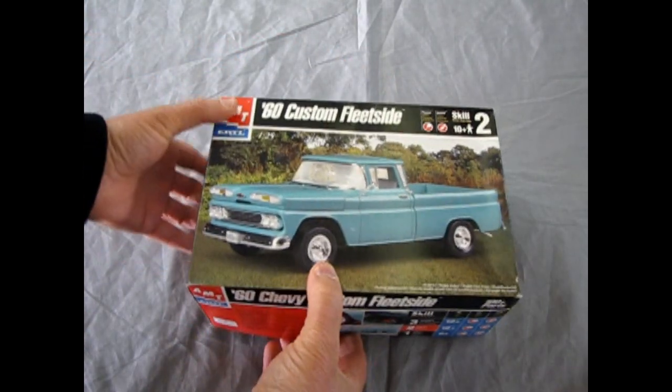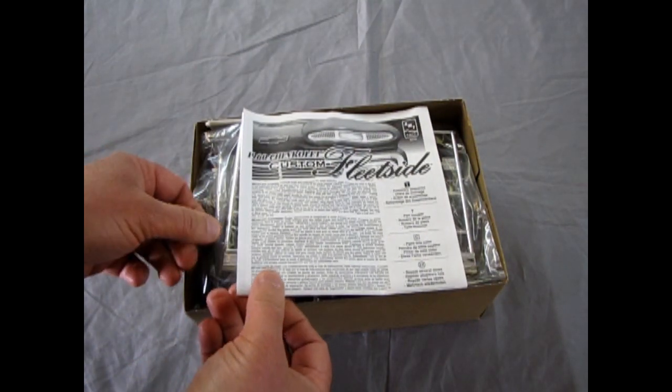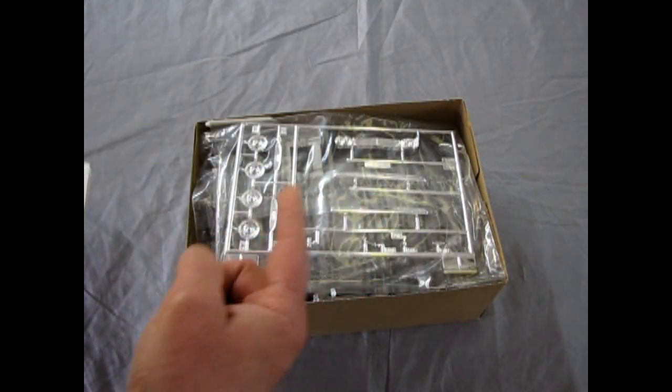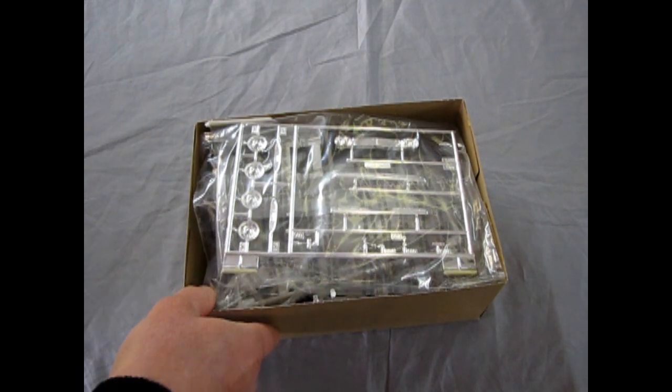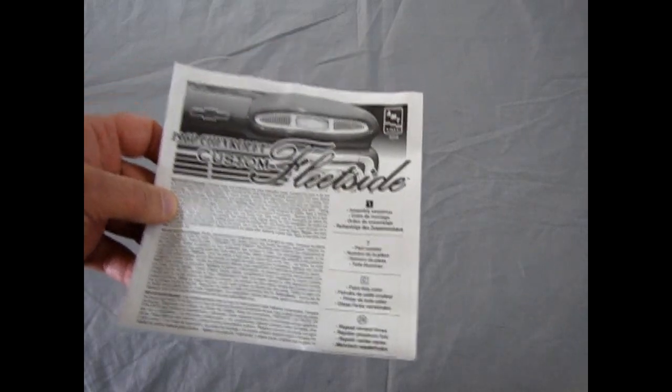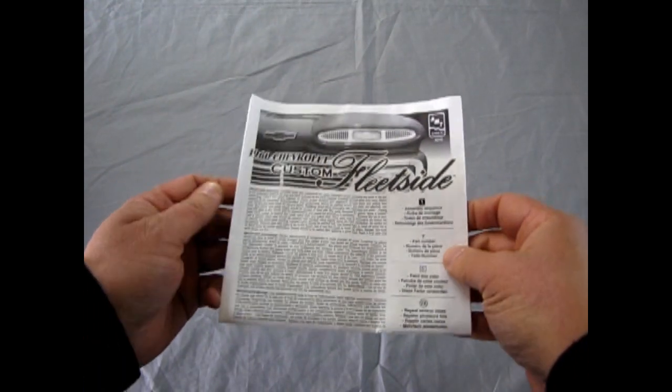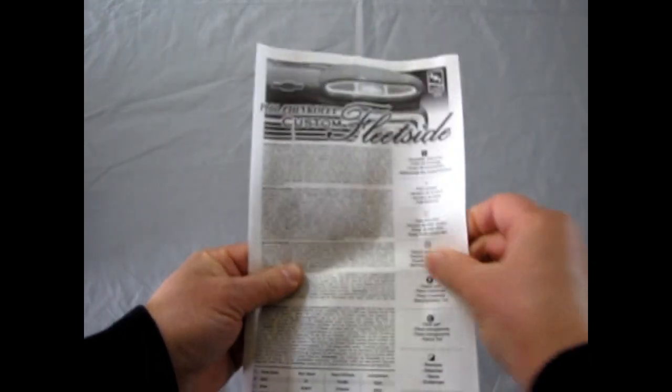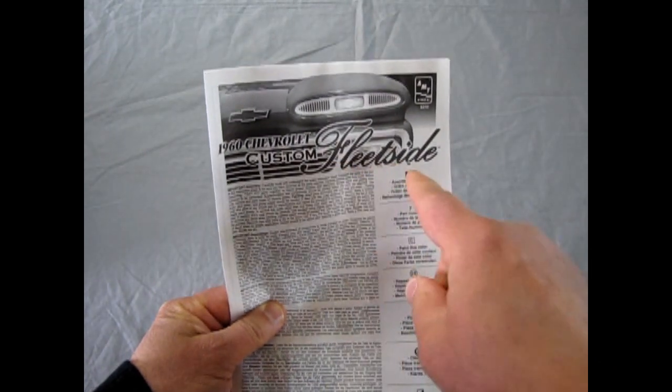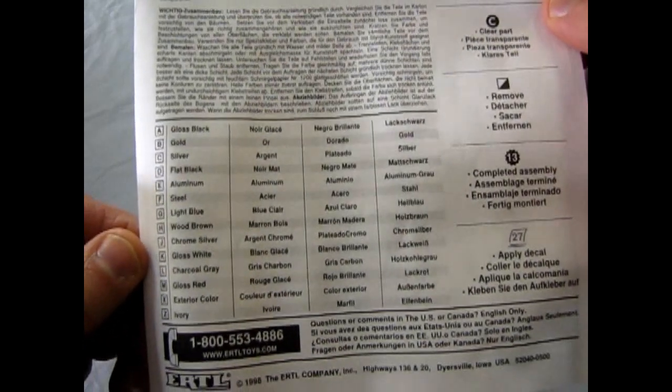So if we take off the lid here, the first thing we get are the instructions. We will be looking at these kit parts in further detail as this video goes on. But for now, I'm moving the box out of the way at the bottom. I'm zooming the camera all the way out and we're going to take a look briefly at these instructions. You get a picture of the real truck with the nice fleet side script there and a call-out sheet for all the paints you are going to need.